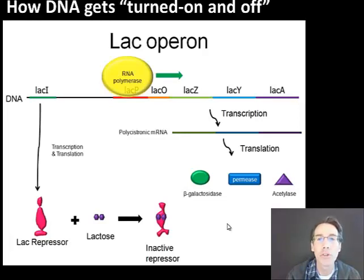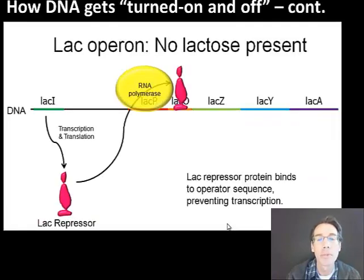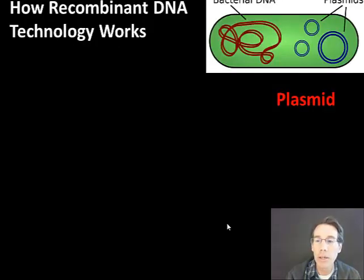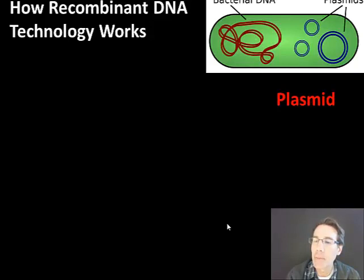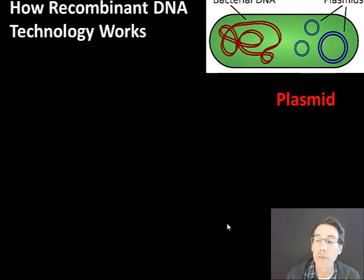So we've seen the gene is now turned on, whereas before it was turned off. That is a system that allows bacteria to have some regulation of how they use their genes. In this next idea of recombinant DNA technology, individual bacteria can respond to their environment by turning genes on and off.